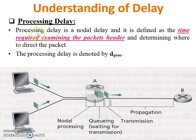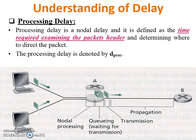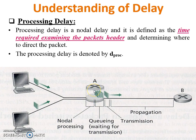First one: processing delay. Processing delay is a nodal delay. It defines the time required to examine the packet header — checking where the packet will be sent from one node to another and determining where to direct the packet. In this figure, if one packet comes from B to A, node A will check the header of the packet and send it to either the upper or lower PC. So it is called processing delay.